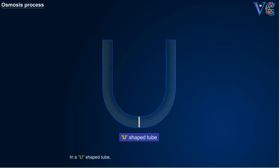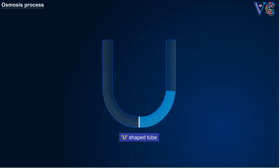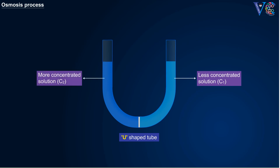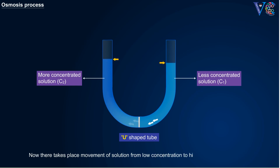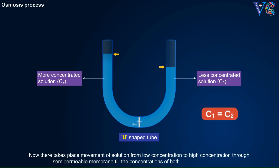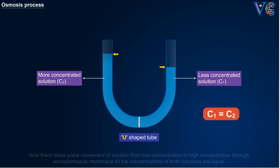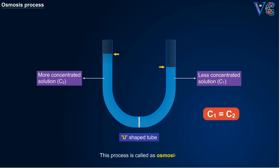In a U-shaped tube, a semi-permeable membrane is fitted at the center. One side is filled with less concentrated solution C1, and on the other side more concentrated solution C2 is filled. There takes place movement of solution from low concentration to high concentration through the semi-permeable membrane, till the concentrations of both solutions are equal. This process is called osmosis.